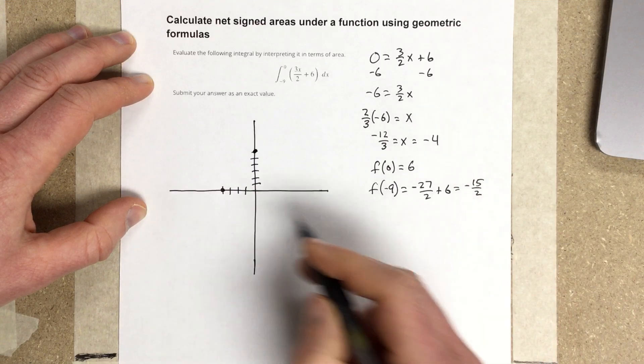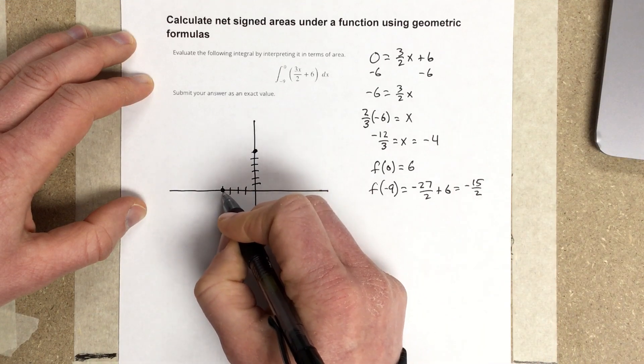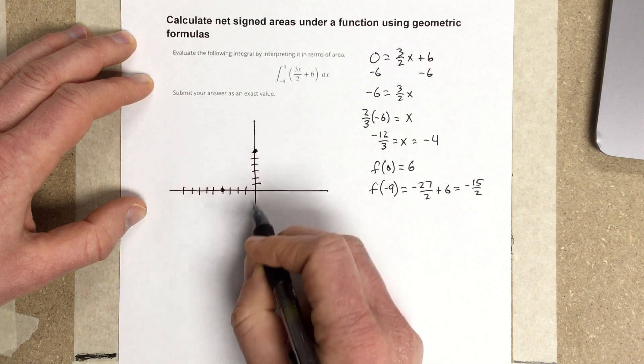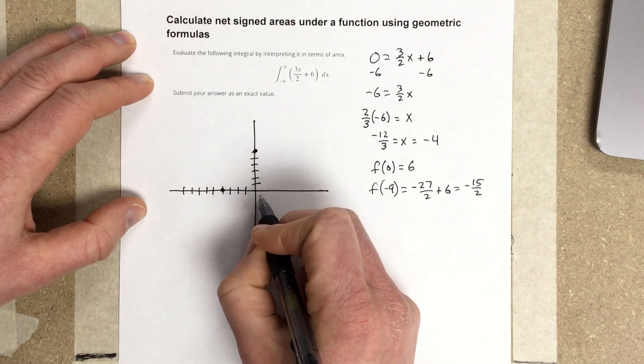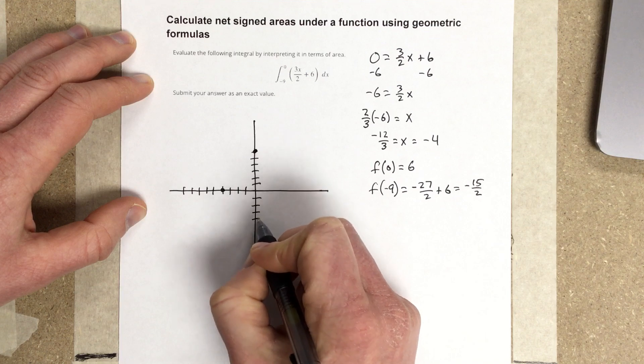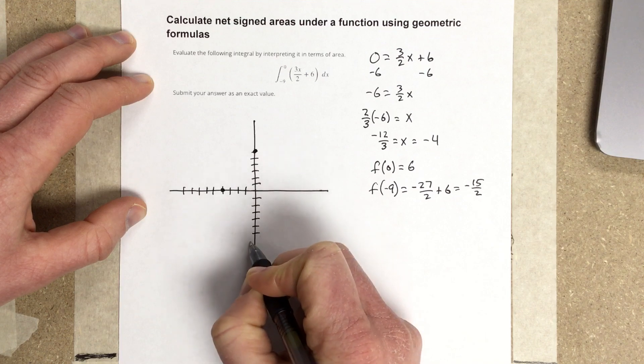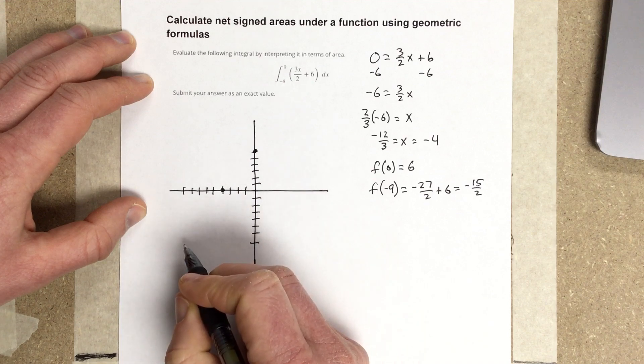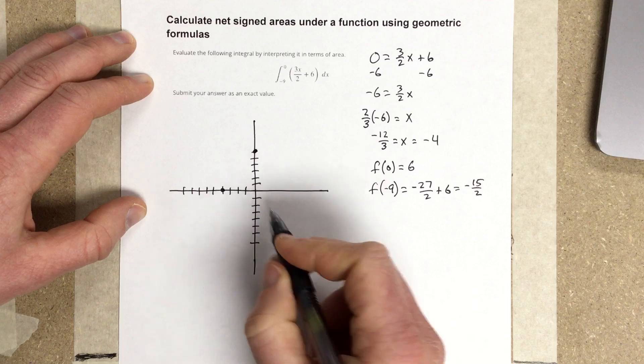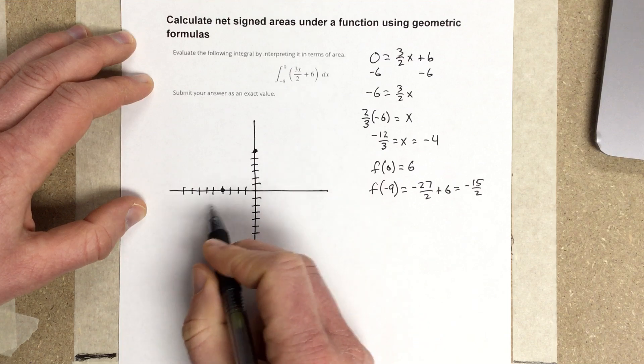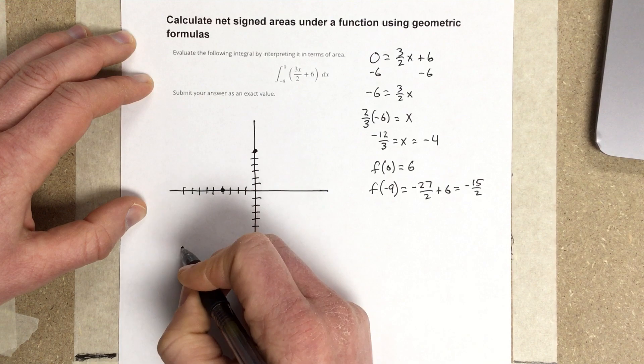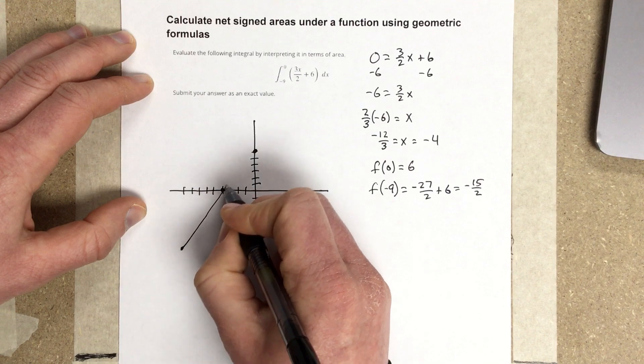And then I have another coordinate, which is negative 9. And then down, negative 15 over 2 is negative 7 and a half, so 7.5, so there's 8, it's like right here. I'm going to draw that function there.